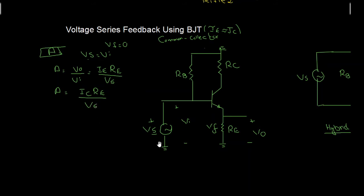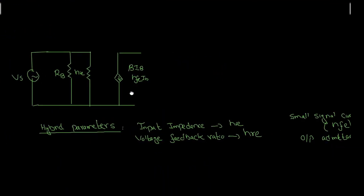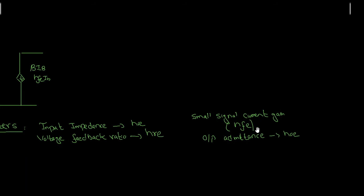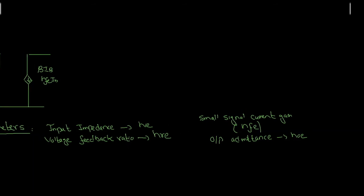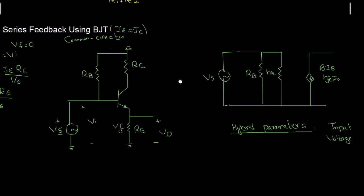I will solve this by drawing the hybrid equivalent model. The four hybrid parameters are: the input impedance HIE, the voltage feedback ratio HRE, the small signal current gain beta equal to HFE, and the output admittance HOE. The more important parameters here are the input impedance HIE and the small signal current gain beta equal to HFE.